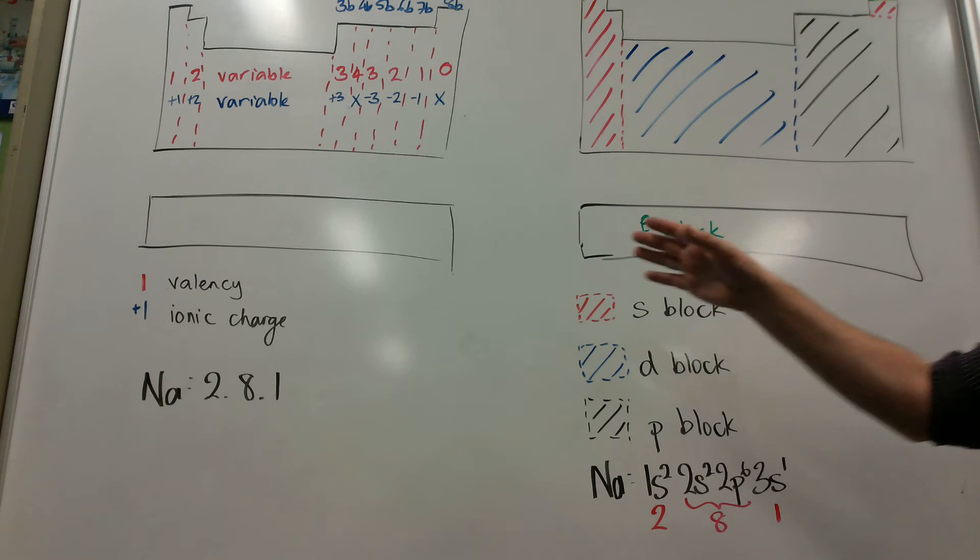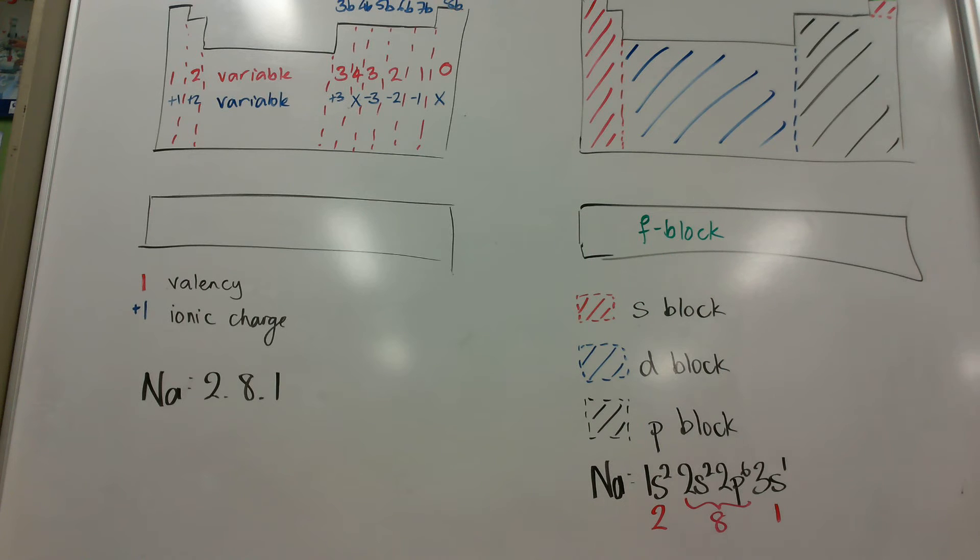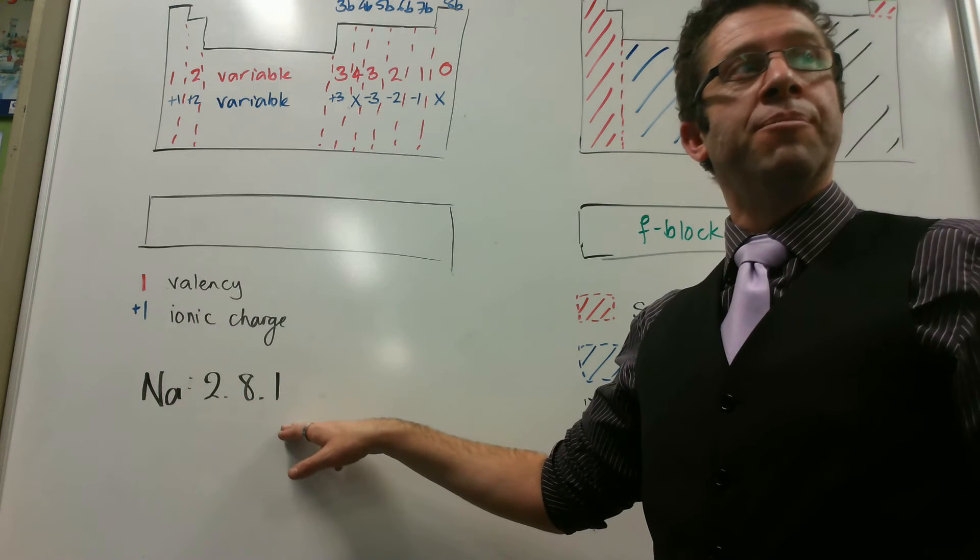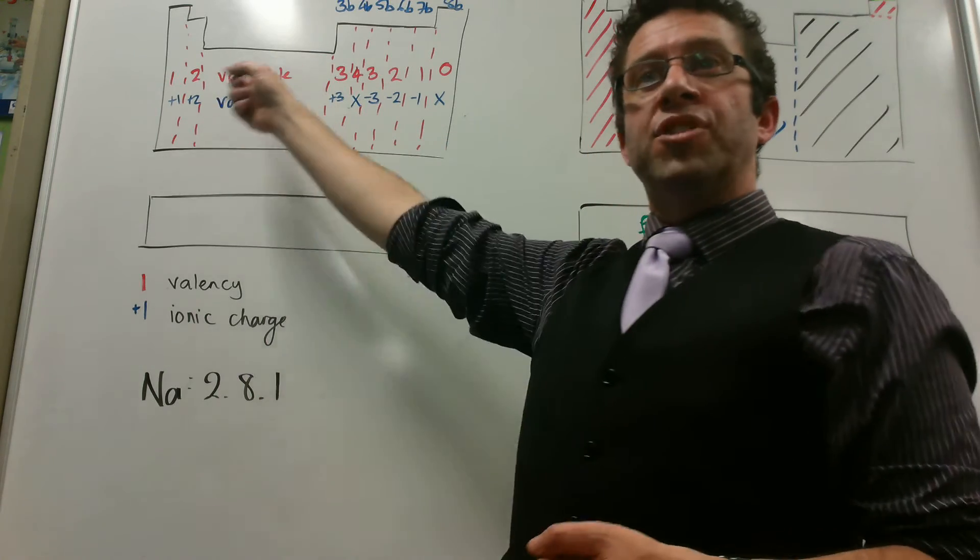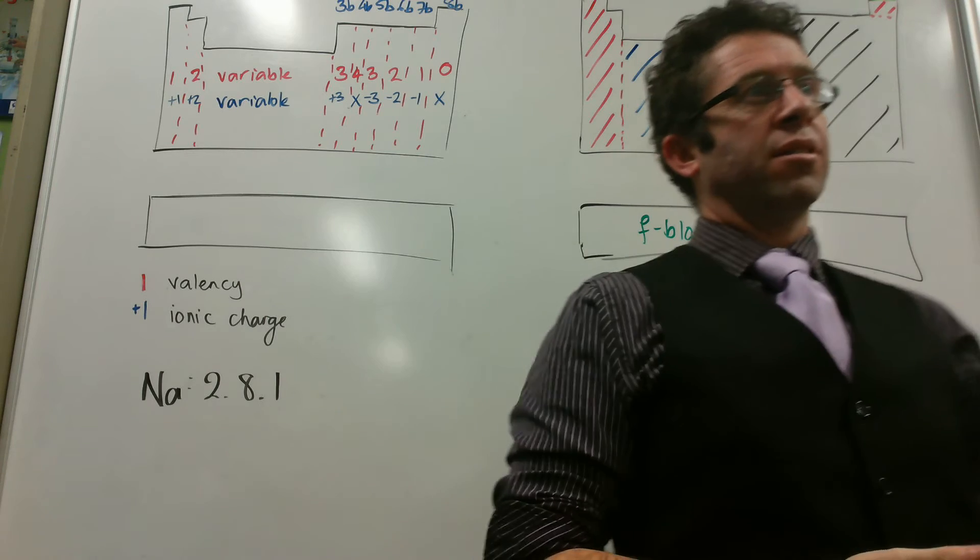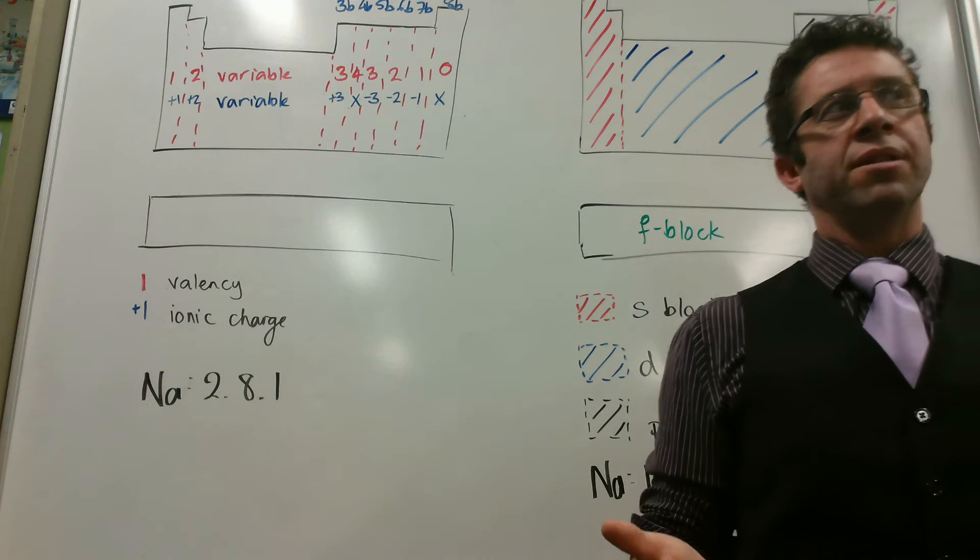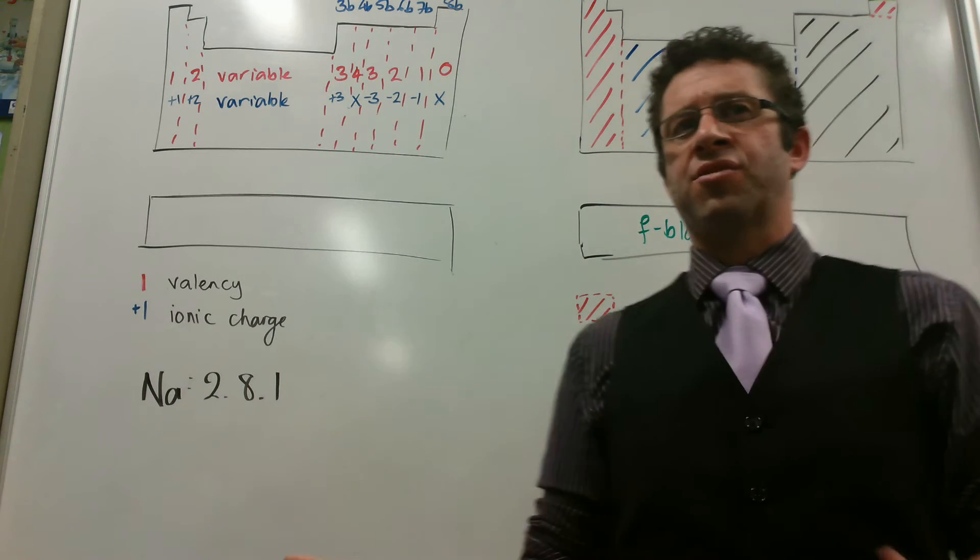We're going to look at how we used to do it using the old Bohr model of the atom, which was the one we went by 2, 8, 1 for sodium, but it never explained these ones in the middle, what we call the transition metals, things like copper having a 1 plus and a 2 plus ion, things like iron having a 2 plus and a 3 plus.